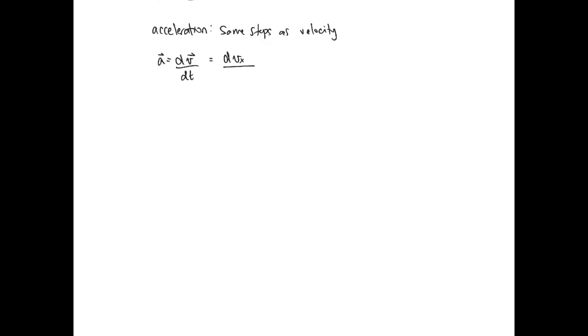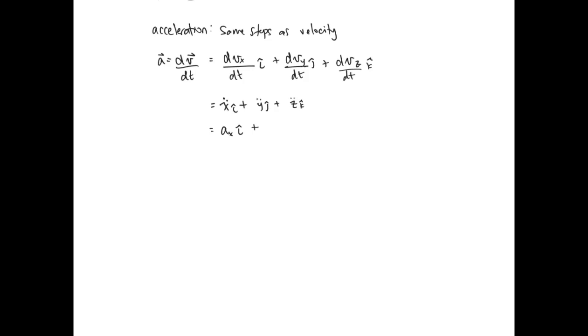For acceleration, we use the same steps as for velocity, and the derivative of the unit vectors cancels out again. Acceleration equals the derivative of velocity with respect to time, giving dvx/dt in the i direction, plus dvy/dt in the j direction, plus dvz/dt in the k direction. In dot notation: x-double-dot·i plus y-double-dot·j plus z-double-dot·k, or ax·i plus ay·j plus az·k.